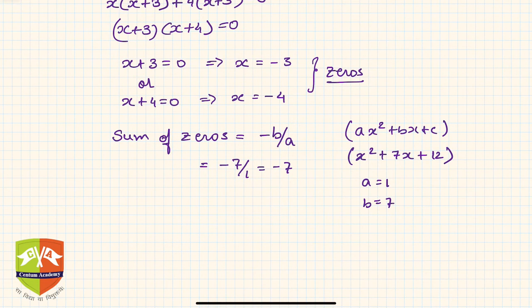The zeros we found are -3 and -4. If you add both: -3 + (-4) = -7. Both are equal, so the sum of zeros = -b/a is verified.